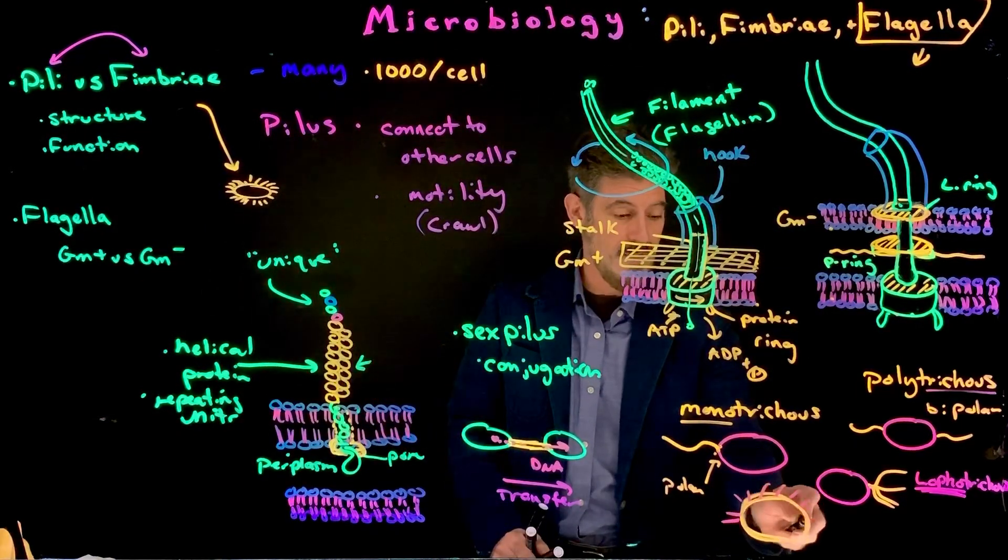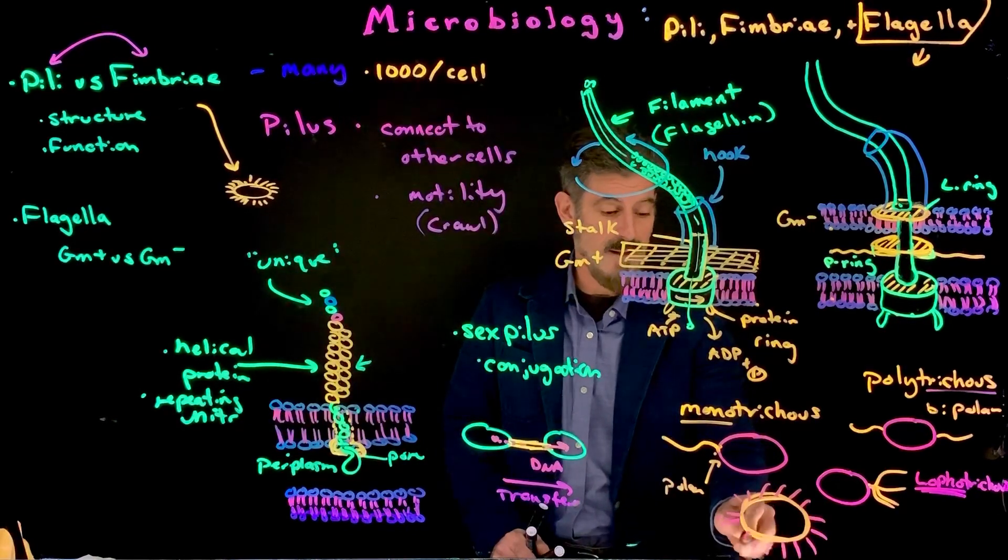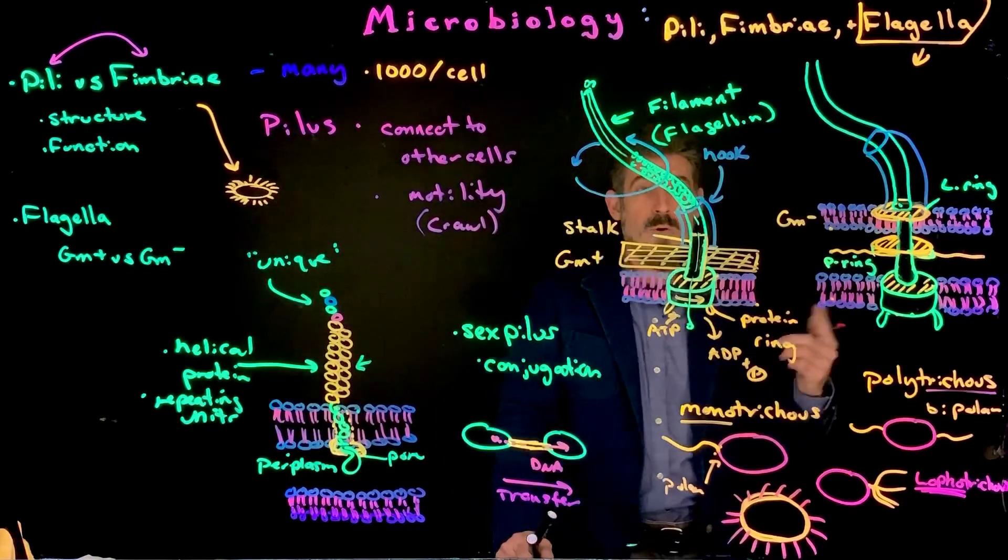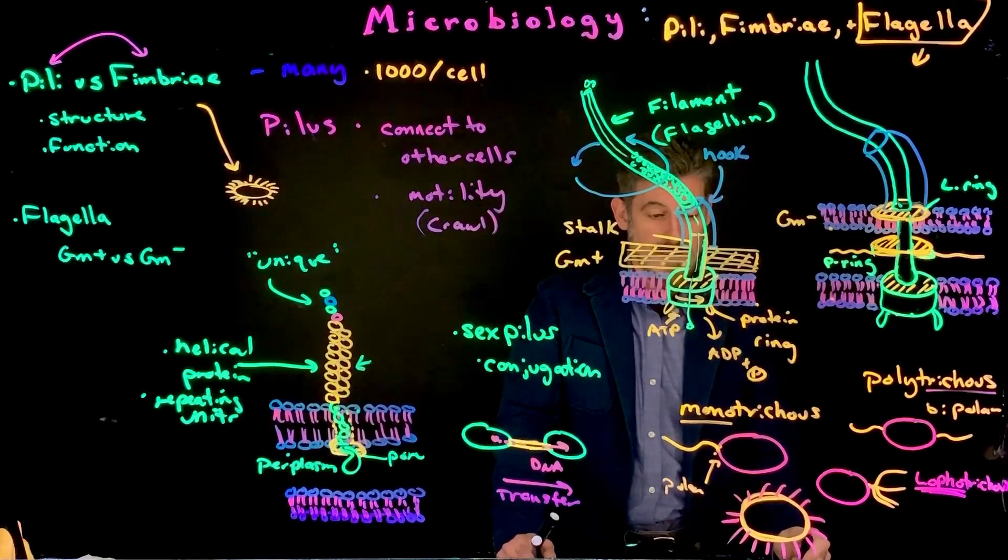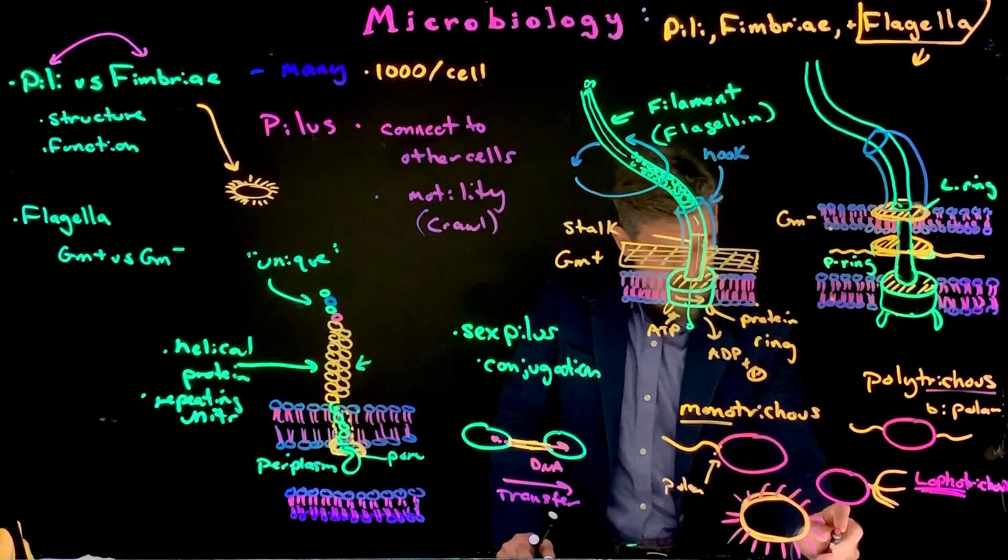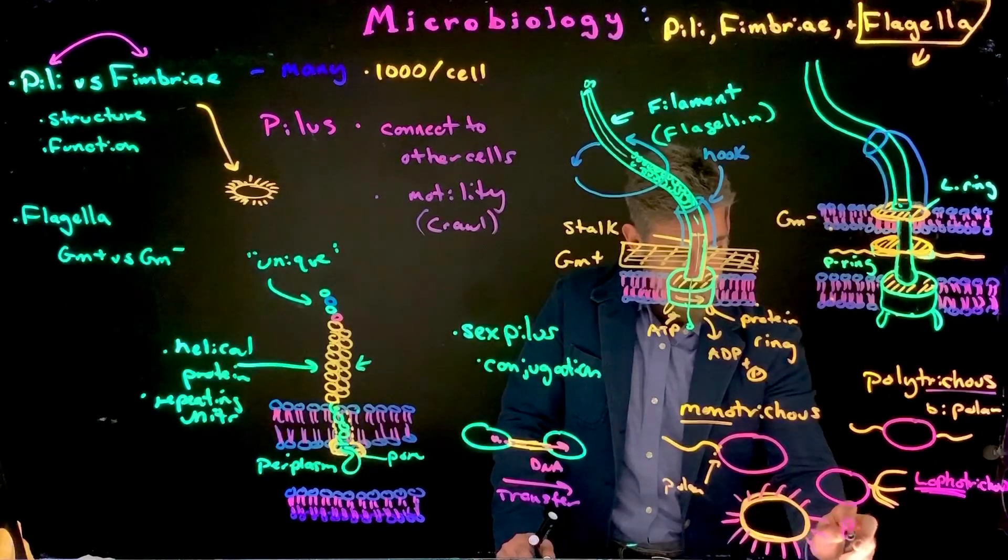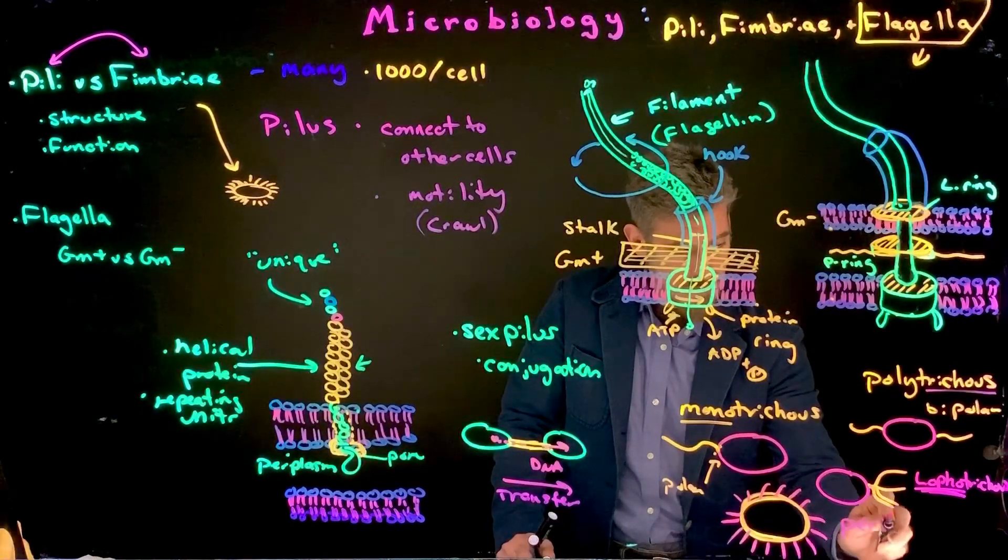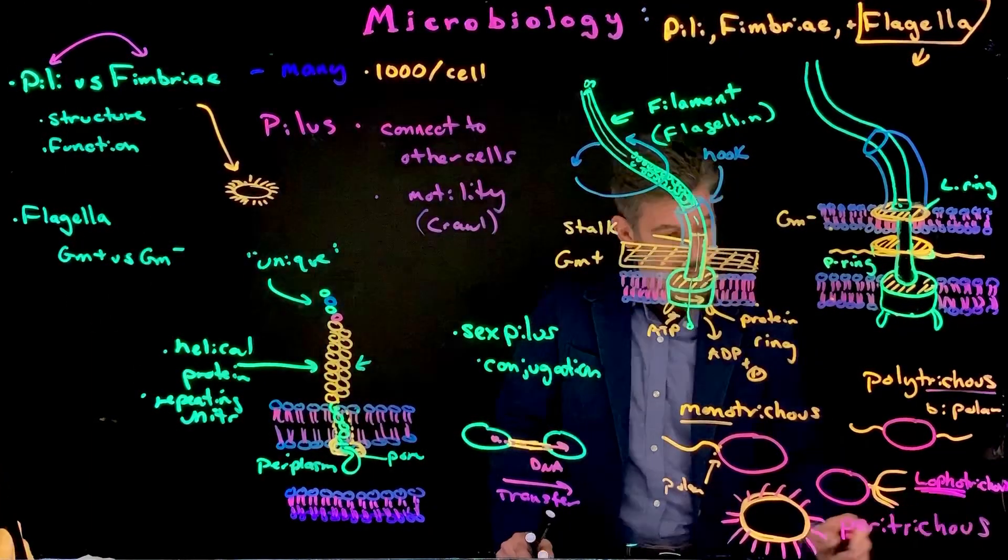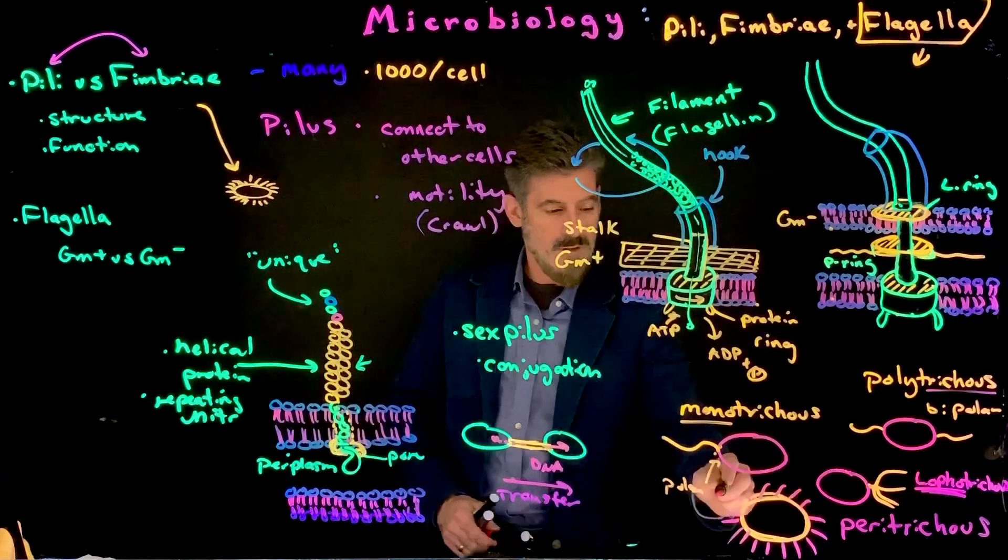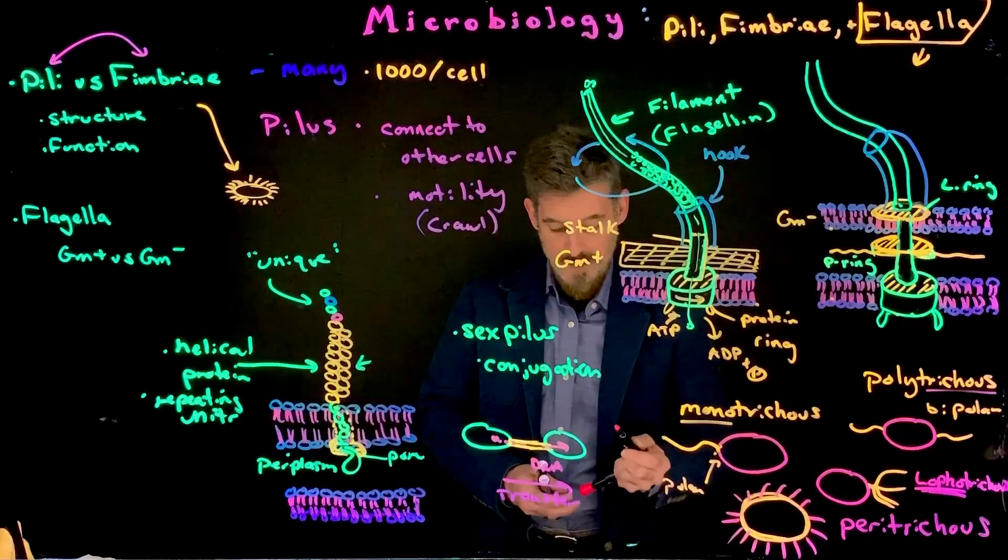this is different here than, say, the fimbriae, because these are all flagella, and so they're all moving, right? And they're all structured the same way, and they're moving sort of in the same pattern, right? So, this is a peritrichous flagella. So, that's kind of where they're surrounding the whole entire cell.